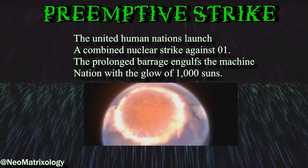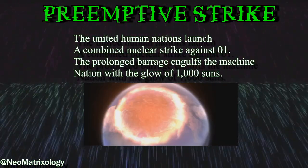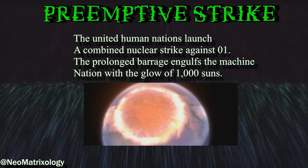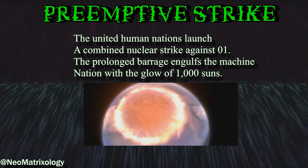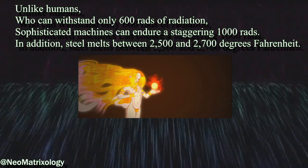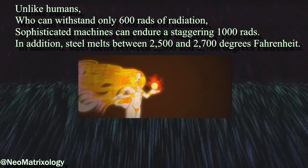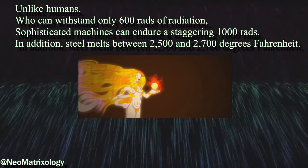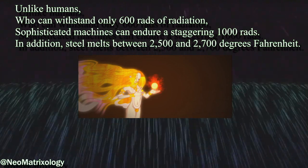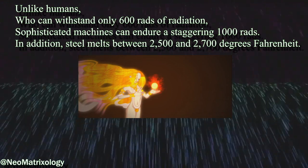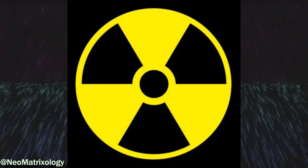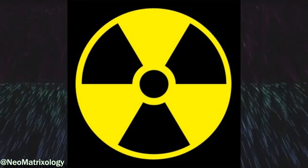Preemptive strike. The United Nations launch a combined nuclear strike against Zero-One. The prolonged barrage engulfs the machine's nation with the glow of a thousand suns. Unlike humans, machines can withstand only 600 rads of radiation. Sophisticated machines can endure a staggering thousand rads. In addition, steel melts between 2500 and 2700 degrees Fahrenheit. Quick footnote: a rad is a single unit of absorbed radiation.